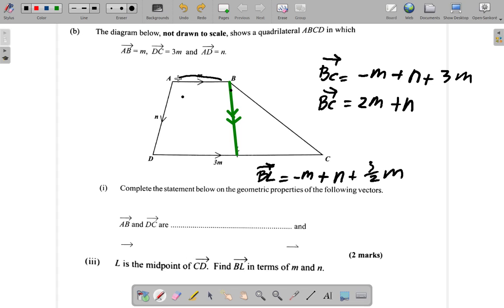Remember, we go this way around the vector. In adding all of these, we have negative M plus 3 over 2M. That's negative 1M plus 1 and a half M, which leaves half M plus N.